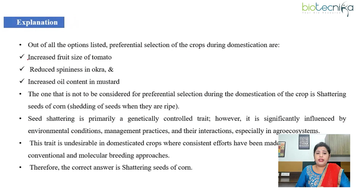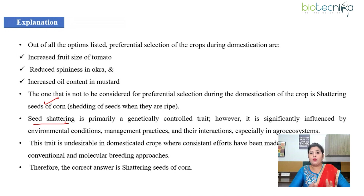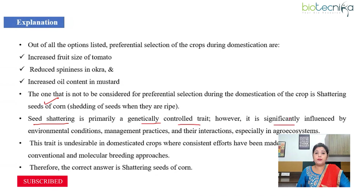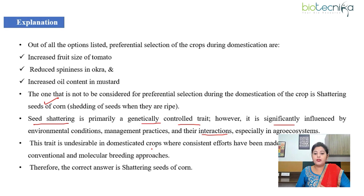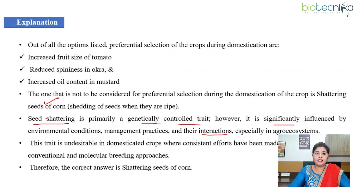Increased fruit size of tomato, reduced spininess in okra, and increased oil content in mustard are all preferential selections during domestication. The one not considered is shattering seeds of corn — meaning the shedding of seeds when they are ripe. Seed shattering is a genetically controlled trait, significantly influenced by environmental conditions and management practices, and is completely undesirable in domesticated crops. There are consistent efforts to minimize it through conventional and molecular breeding approaches. Therefore, the answer is option three.